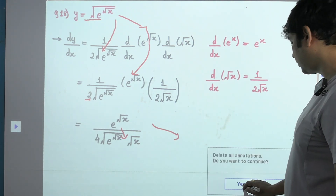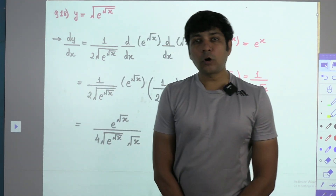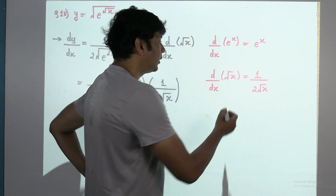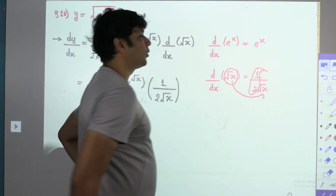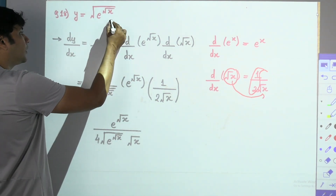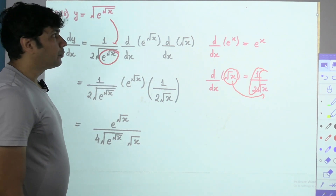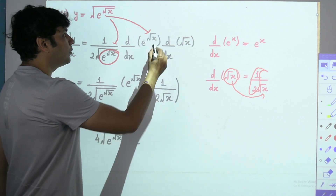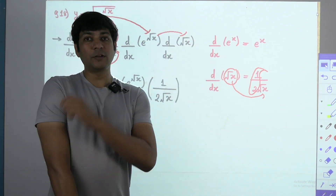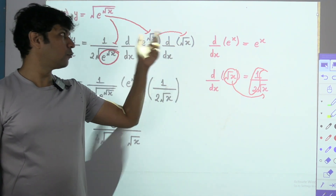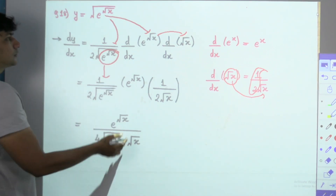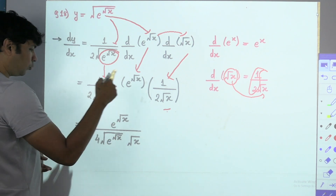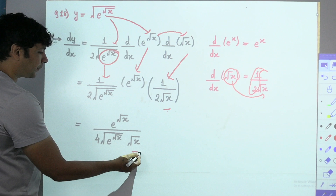Last question: y = √(e^(√x)). Whenever root comes, give it first priority. Root of whatever is in the bracket differentiates to 1/(2√(bracket)), into differentiation of e^(√x). For exponential with weird power, write the question as is: e^(√x), then differentiate the power √x, which is 1/(2√x). So: 1/(2√(e^(√x))) · e^(√x) · 1/(2√x). Simplifying: e^(√x) / (4√x · √(e^(√x))). Do not try to multiply further.